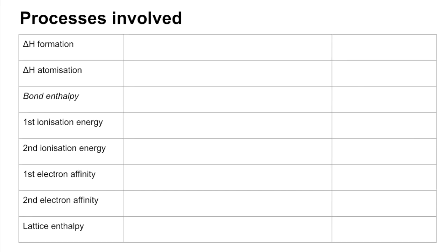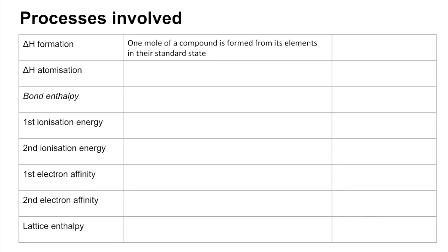Before going into the actual cycle itself, let's look at the processes involved and whether they are exothermic or endothermic. Enthalpy change of formation is the enthalpy change when one mole of a compound is formed from its elements in their standard state. That is an exothermic process.